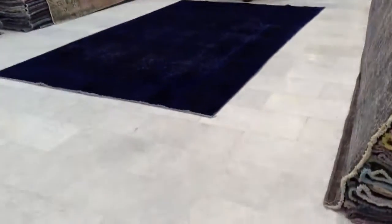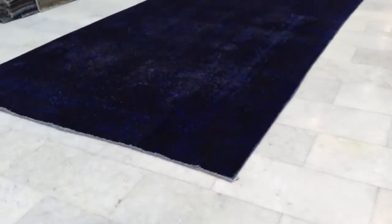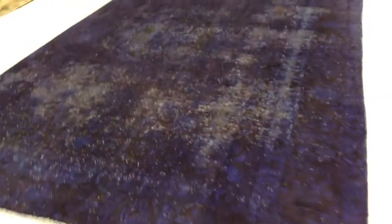This carpet is 4463. It's a handmade Persian vintage carpet. It's got this dark blue with an almost black combination with its vintage elements.